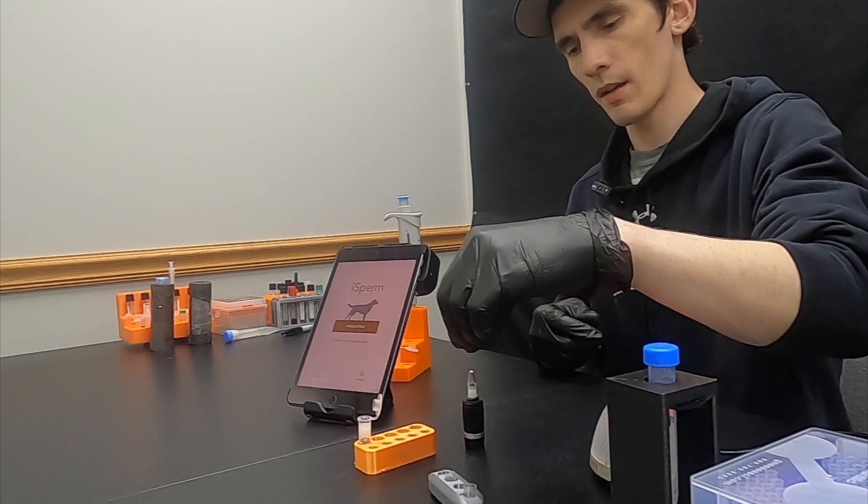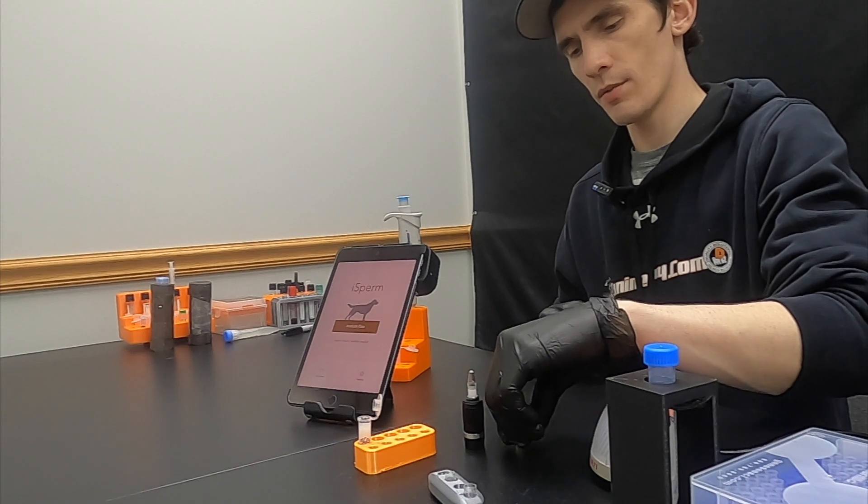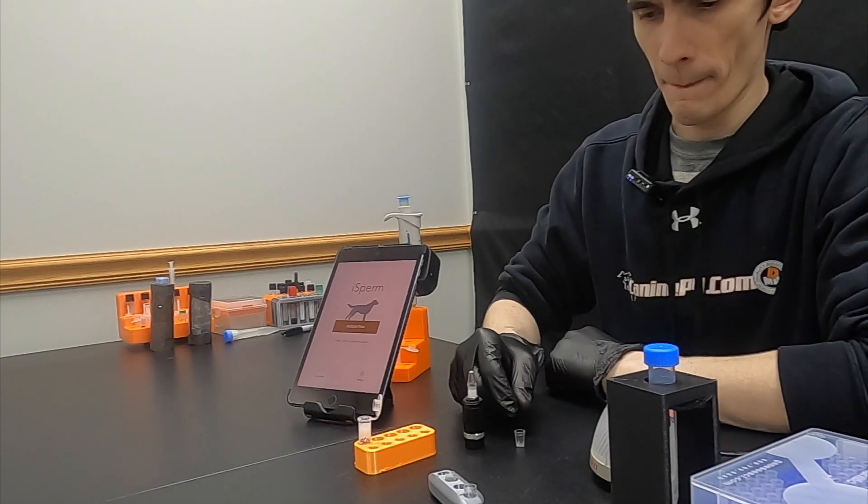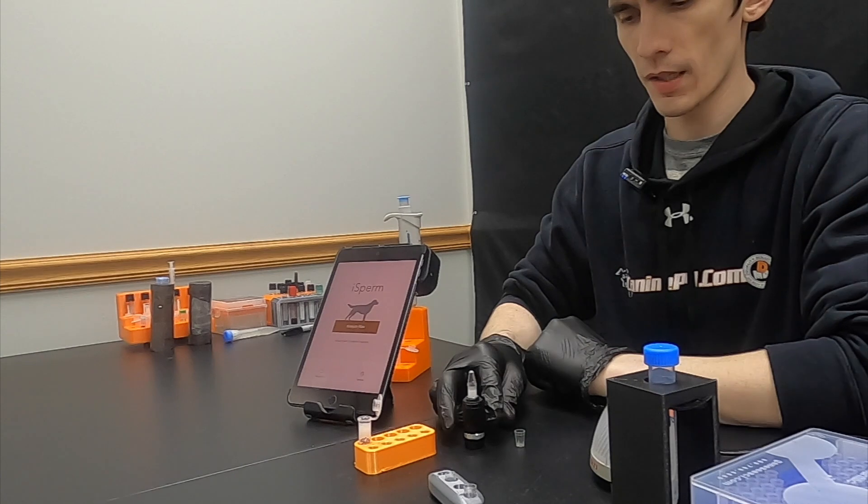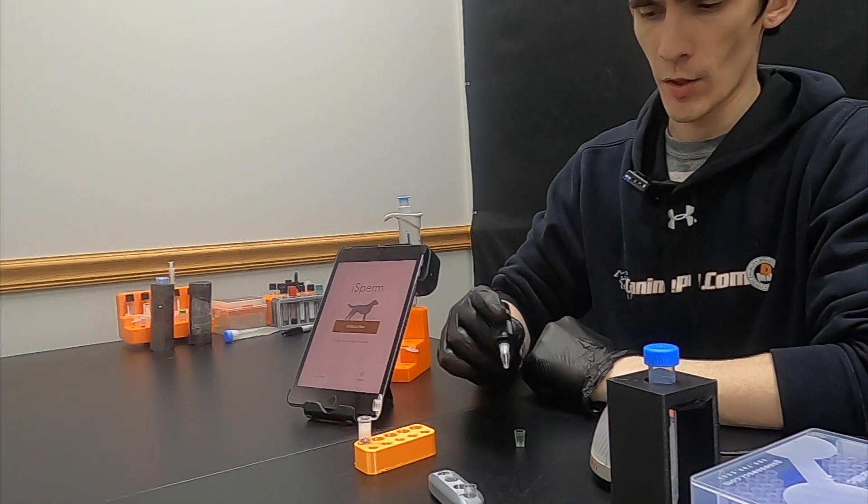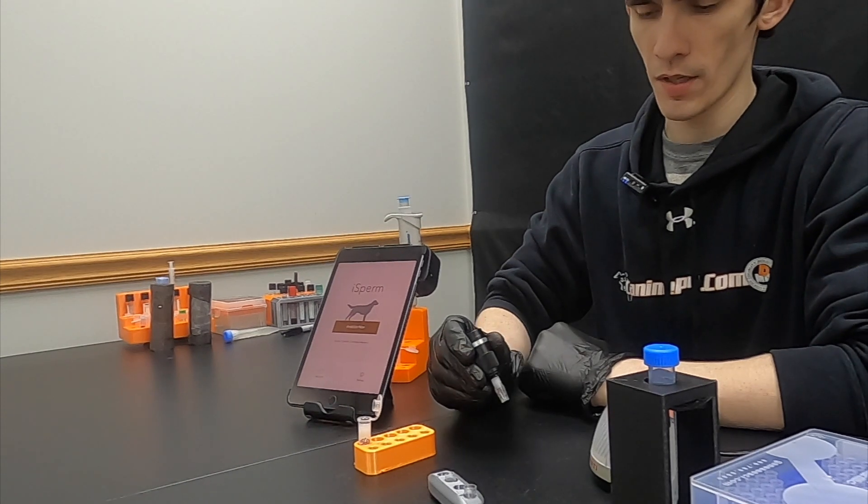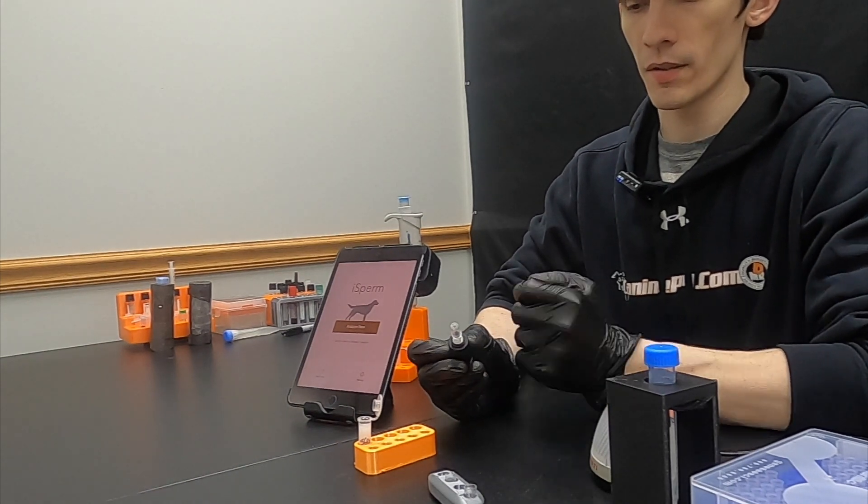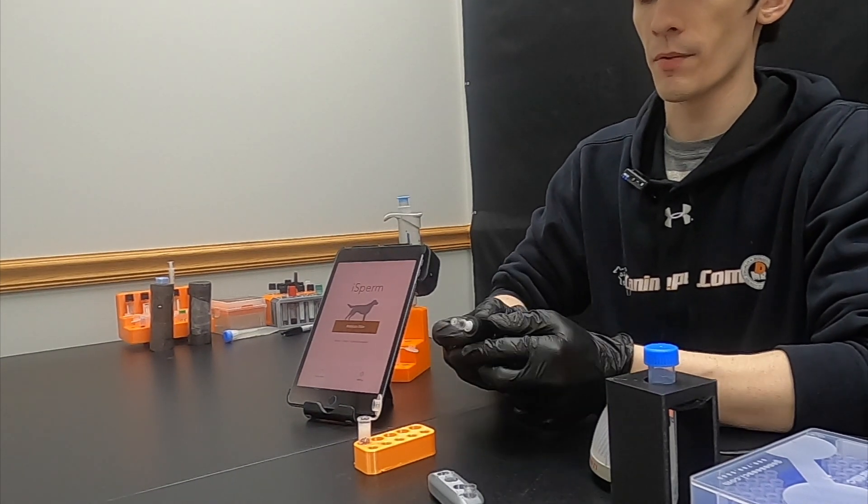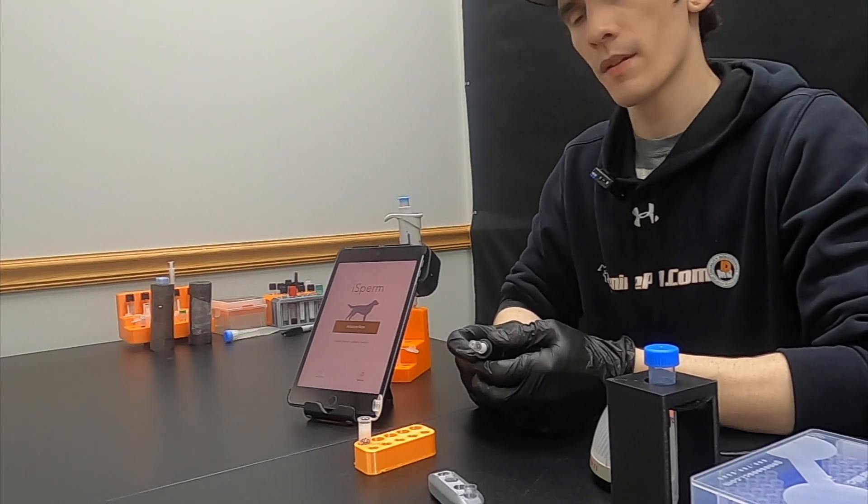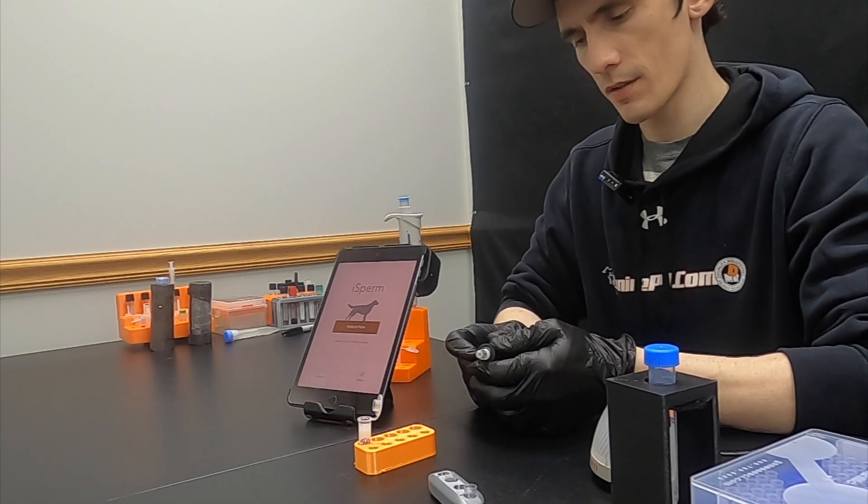We will then take a cover chip, try to avoid placing it on dirty or contaminated surfaces. Quickly invert and flip over the sample collector and cover chip and snap it together until it clicks into place. This will create about a one cell thick layer of the sperm sample to then take an analysis with.